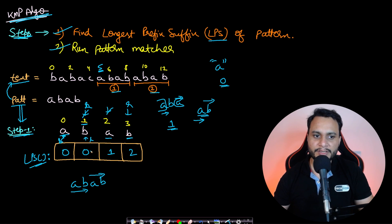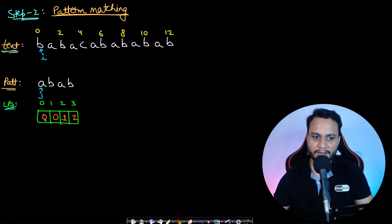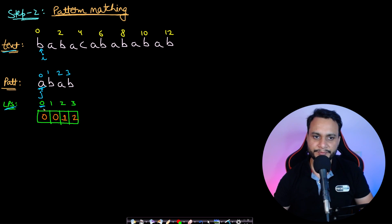Now let's use this LPS array to find the pattern in the text — step two, running the pattern matcher. We have an i pointer on the text and a j pointer on the pattern. If the i-th and j-th characters match, we move both forward. When 'b' and 'a' don't match, we check the LPS array; since we are already at index 0 we can't move left, so we just move i to the right. Then 'a', 'b', 'a' all match consecutively.